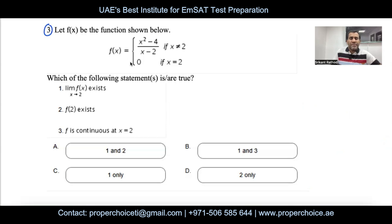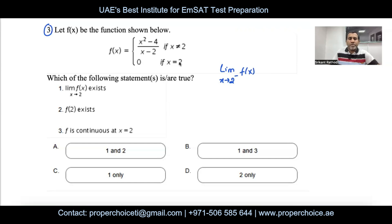Question 3: let f be the piecewise function shown below. Which of the following statements are true? Statement 1 says: limit as x → 2 of f(x) exists. The limit exists only when the left-hand limit and the right-hand limit are equal. For the left-hand limit (x → 2⁻), since we're approaching from values less than 2, we use the expression (x² − 4)/(x − 2).